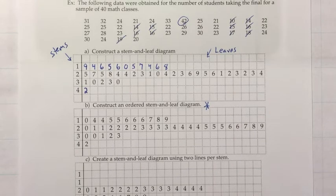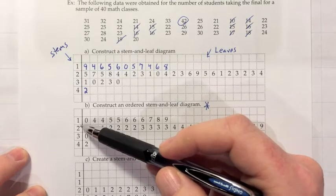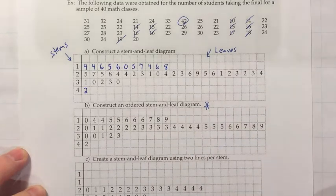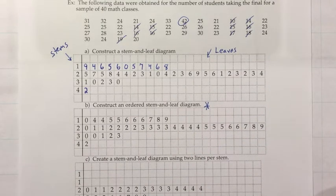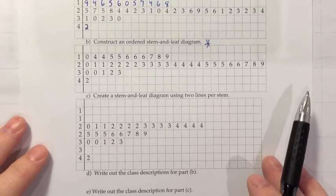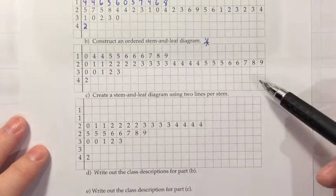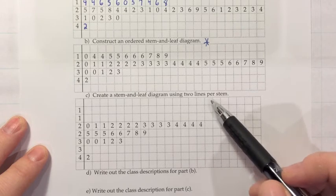Alright. So now we've got an ordered stem and leaf diagram, but there's still one problem with this. If you just count how many classes we've done in terms of our groupings, we have the tens, twenties, thirties, forties. That's only four classes. And we said in previous sections that when we're grouping data, we like to have between five and 20 classes. So one way that you can accomplish that when you don't have enough classes with your basic stem and leaf diagram is to create a stem and leaf diagram using two lines per stem.